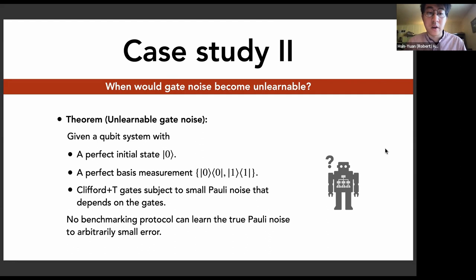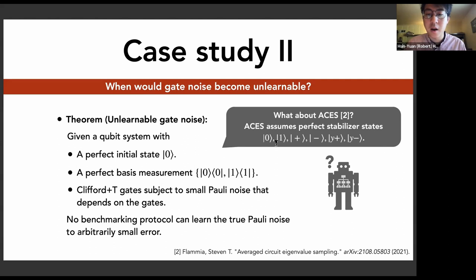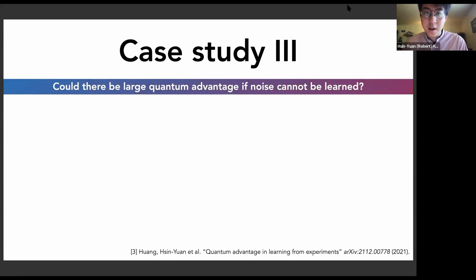A nice thing here is that you can learn the amount of noise — the average magnitude of noise over different gates — you just cannot learn the shape of the noise. One might ask about Steve Flamia's ACES method (Average Circuit Eigenvalue Sampling), which proposes learning gate-dependent Pauli noise. In ACES, it assumes perfect stabilizer states — if you can prepare 0, 1, plus, minus, y-plus, y-minus all perfectly, then you can learn everything. But here we're only assuming you can prepare the zero state perfectly, so in that scenario you cannot learn everything.